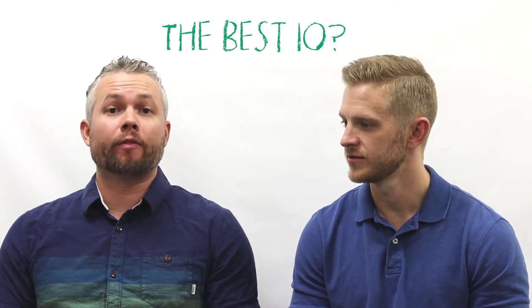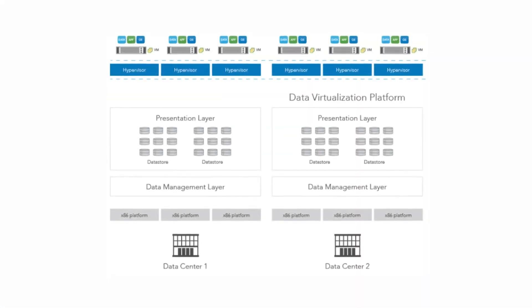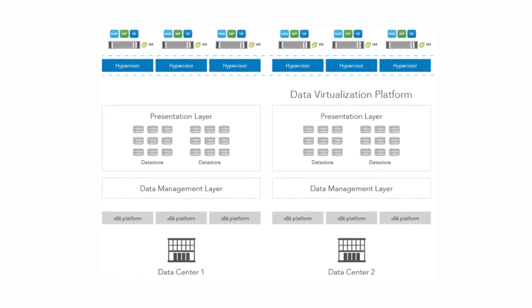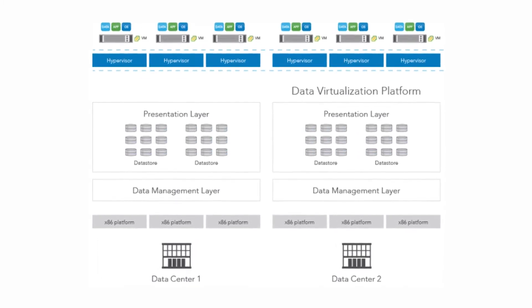One big thing that HPE hits on is that the best IO in your environment is the one that you don't have to write. With their data virtualization platform built into SimpliVity, it's a thin layer that sits between the virtualization layer and the actual infrastructure. So when data is written, it actually gets globally de-duplicated across their environment. You don't have multiple copies of the same data taking up valuable resources — you just have pointers that say the data's over there, go retrieve it. So it's highly efficient.